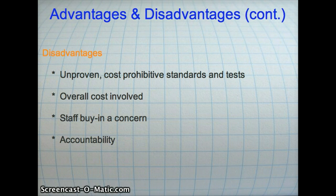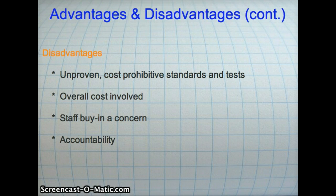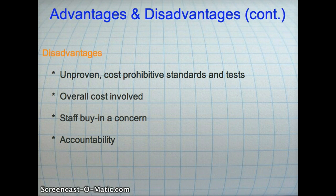There are several states that have rejected Common Core Standards, two of them being Alaska and Texas, as some see disadvantages in this type of reform. One argument is that the standards are unproven and cost prohibitive, and one governor will not commit his state's taxpayers to fund this. Overall cost is a major concern, including potential costs for new textbooks and teacher training. There is also fear that there will be less local control in the classroom. Accountability — ensuring that schools follow the standards — is what the assessments are for.